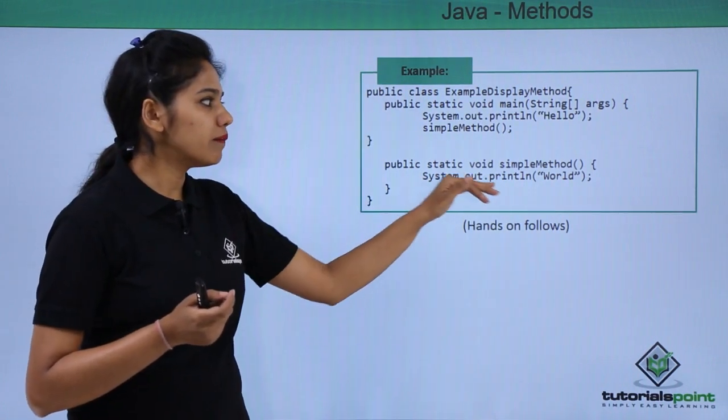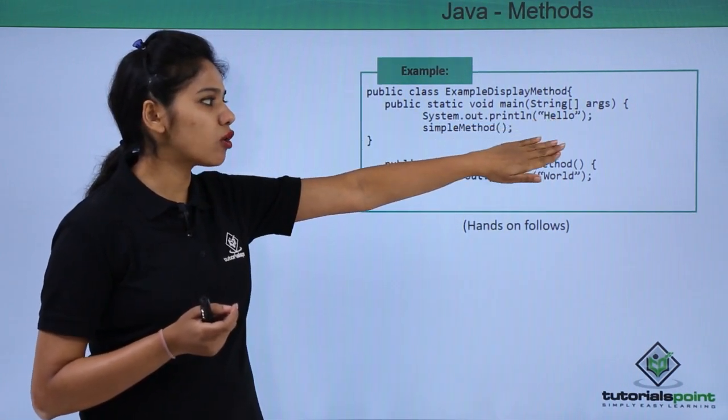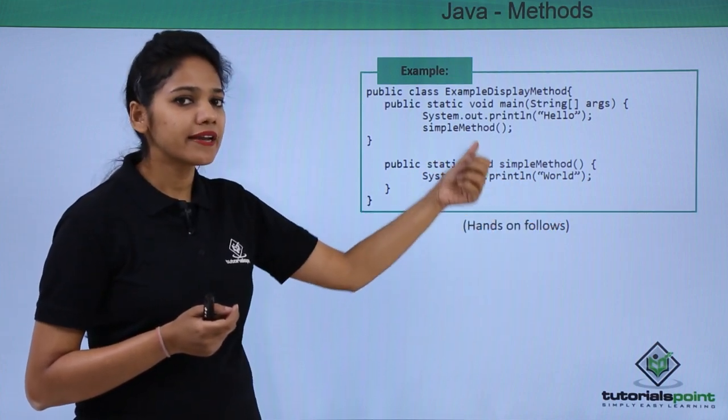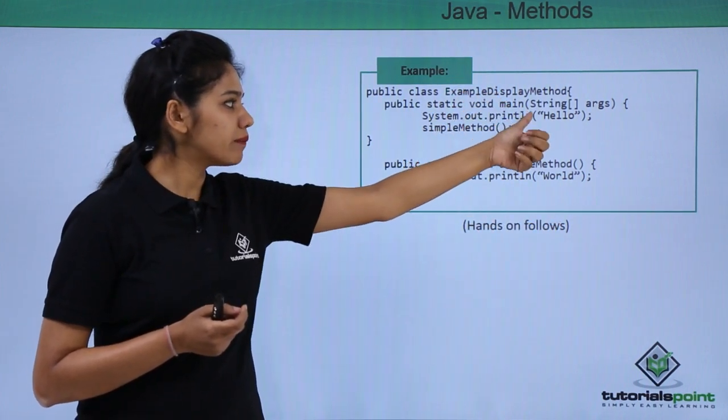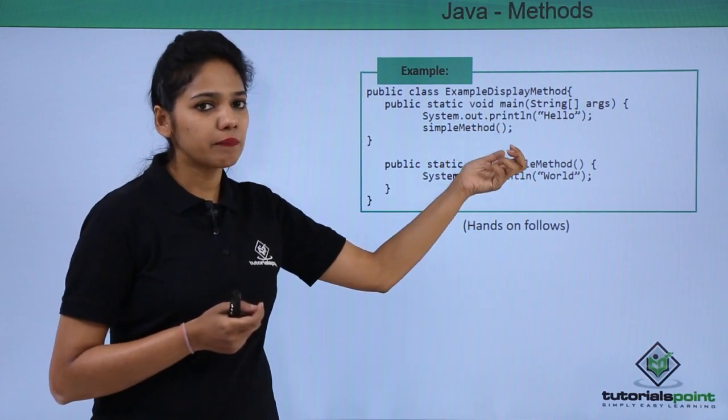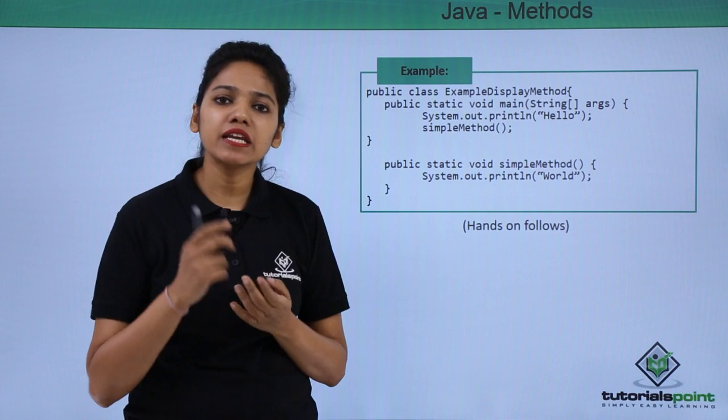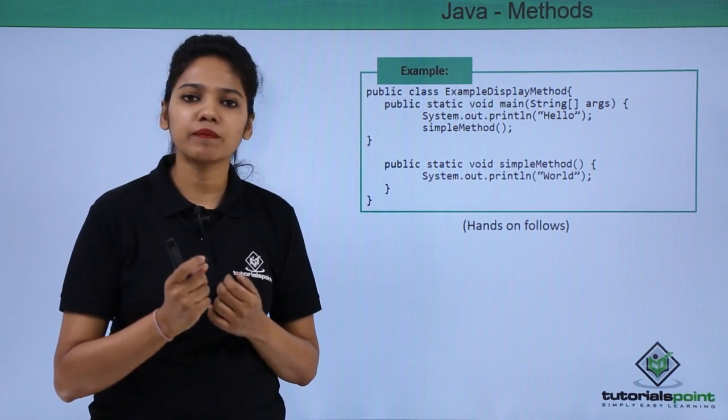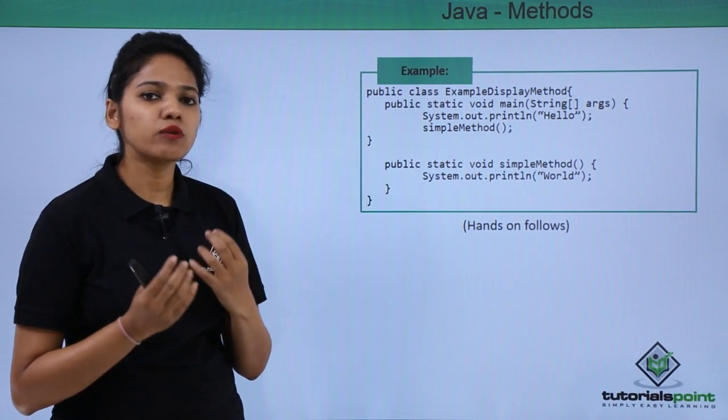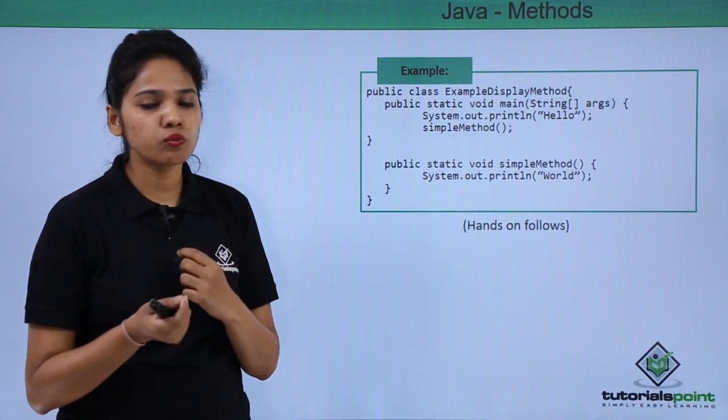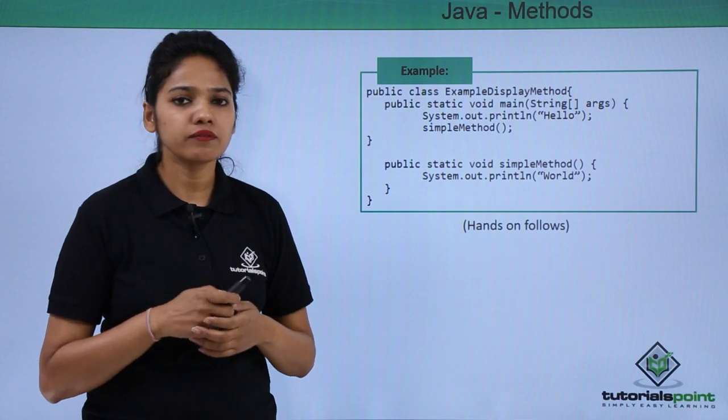So now when you execute this program, it will print an output called hello and then void. So in order to call this method, under your main method, you just need to provide the method name. So the summary would be here is understanding why do you need method, how can you create method. We'll see in detail what are the complex methods, how do you return value, how do you use void keyword in our going forward videos.